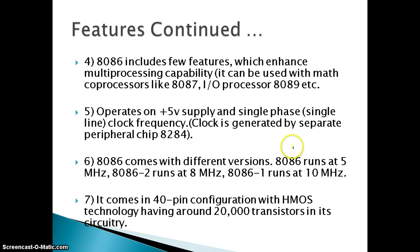A few more features: it has multi-port capacity and can work with a math co-processor like the 8087 or I/O processor 8089. Its electrical characteristics are that it can operate with 5 volts on a single phase line. The working frequency is usually generated by the 8284 clock generator IC. It is available in different versions based on frequency ranges like 5 MHz, 8 MHz, and even 10 MHz.